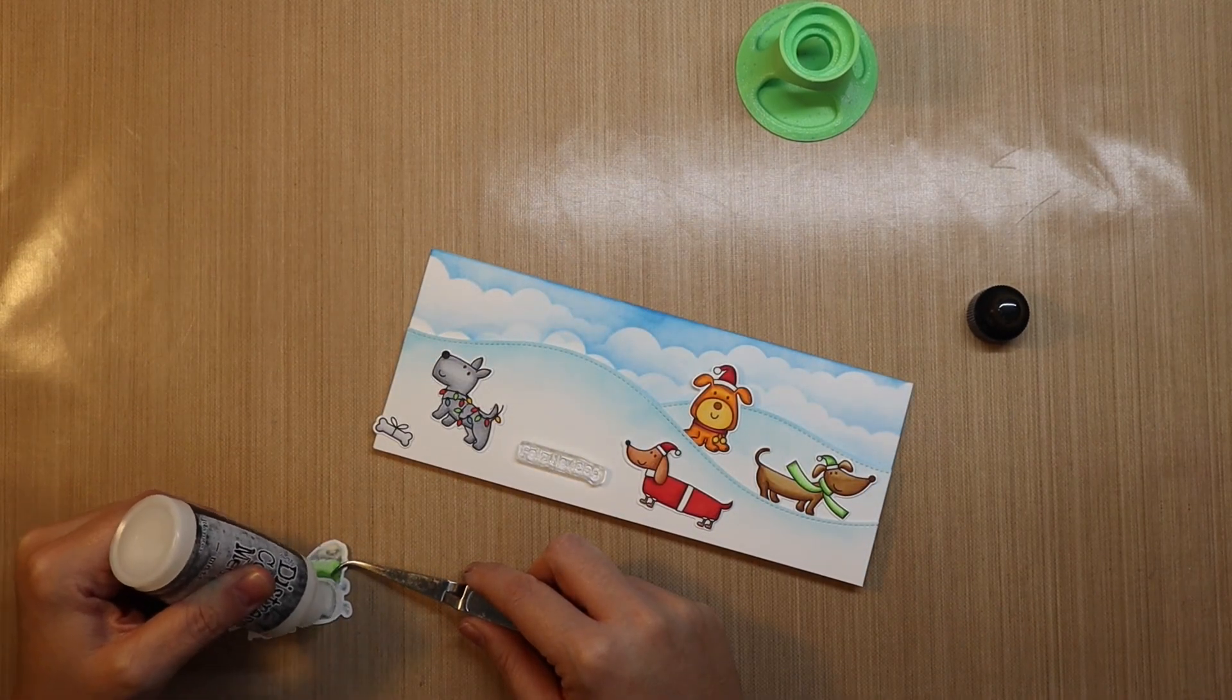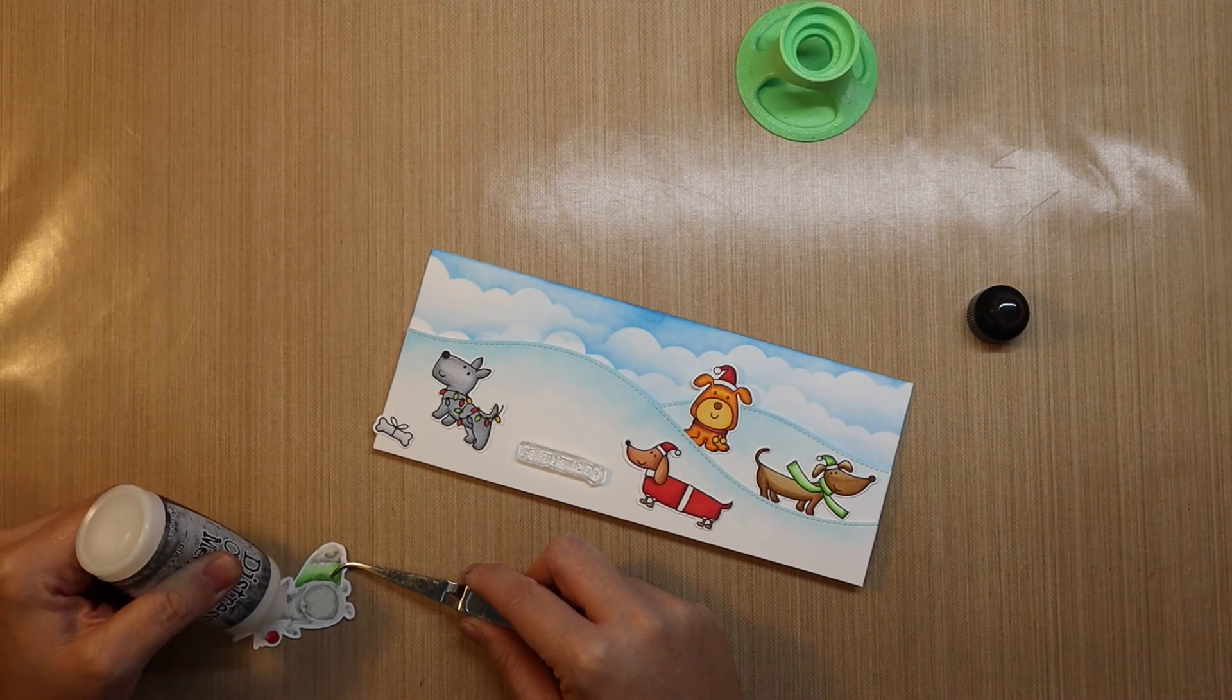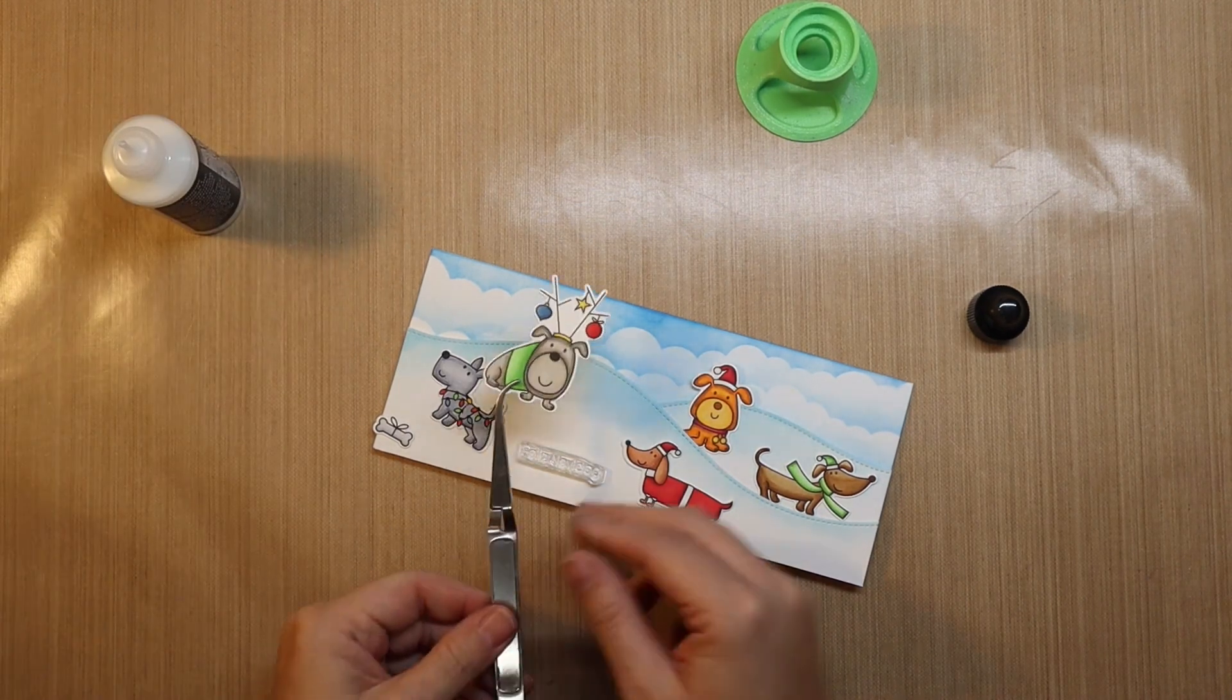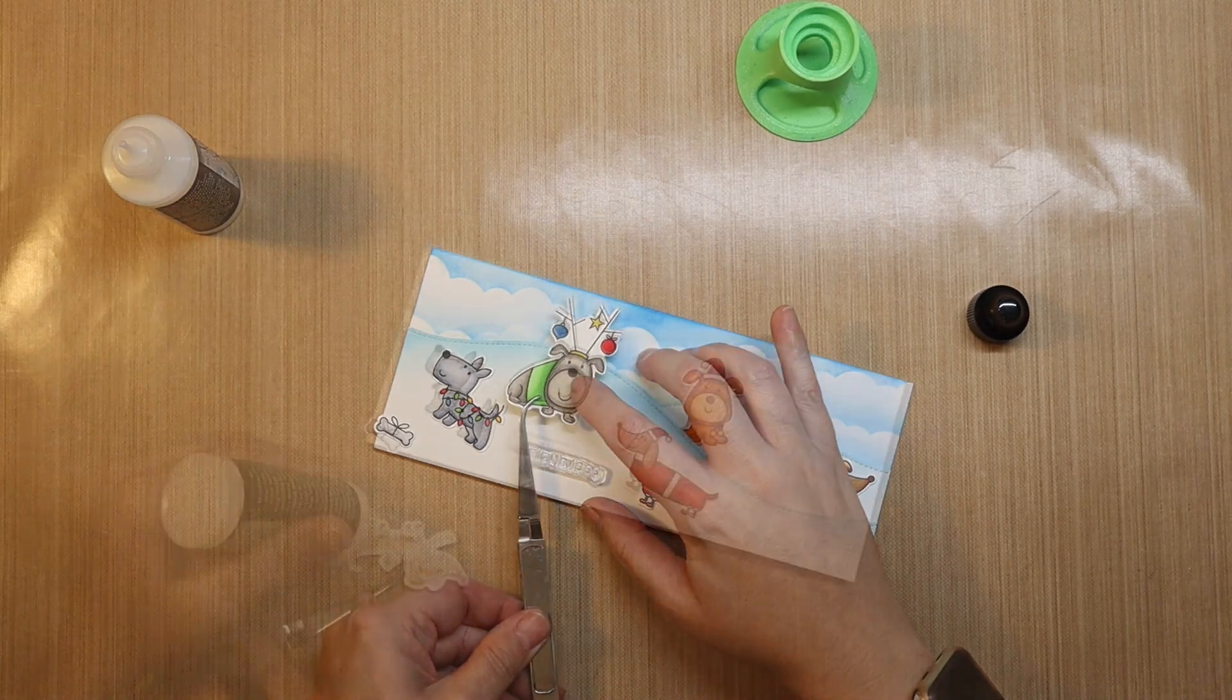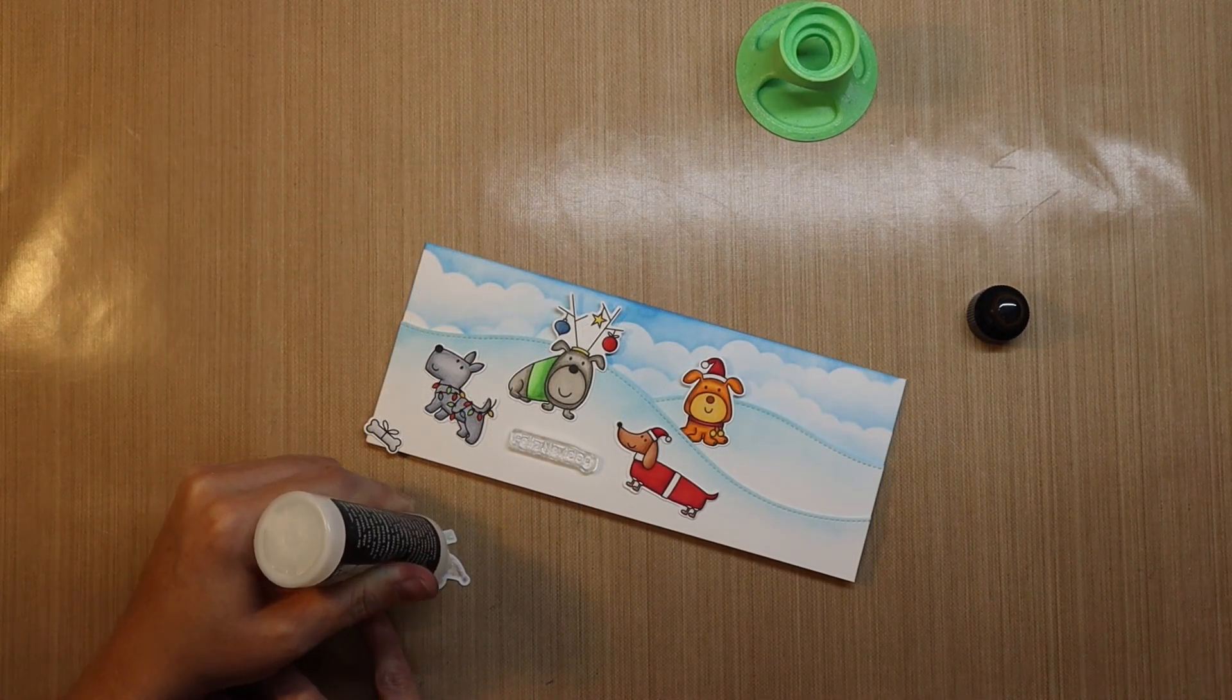And then once I get all these glued down, again using distress collage medium, I transfer the whole thing into my Misti and get that sentiment stamped.